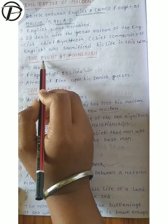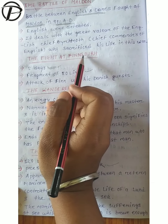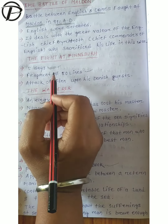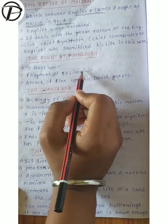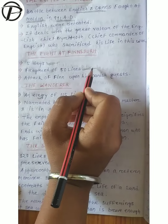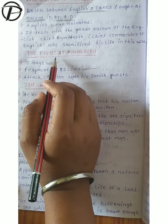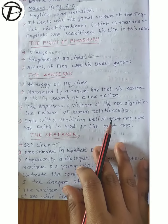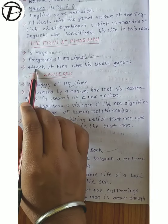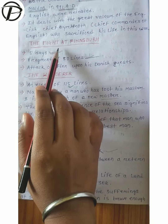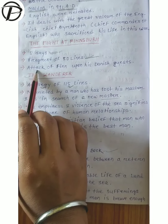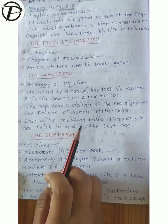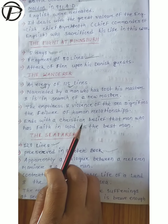The next important work is the Fight at Finnsburg. This is of 50 lines and the fight lasted for 5 days. In this work, it is the attack of Finn of Finnsburg upon his Danish guests.